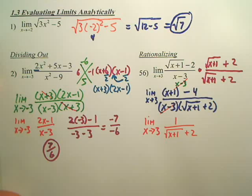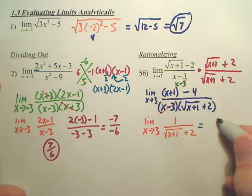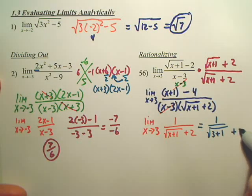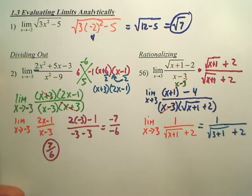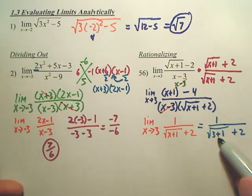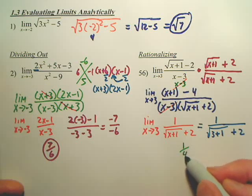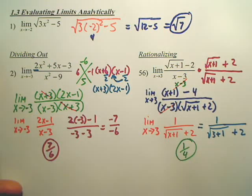So let me say, what does that do? Well, can you now plug in 3? Yeah. 1 over the square root of 3 plus 1 plus 2. And what is the square root of what's this going to be? 2. 2 because square root of 4 is 2. And 2 plus 2 is? 4. So my answer is? 1/4.